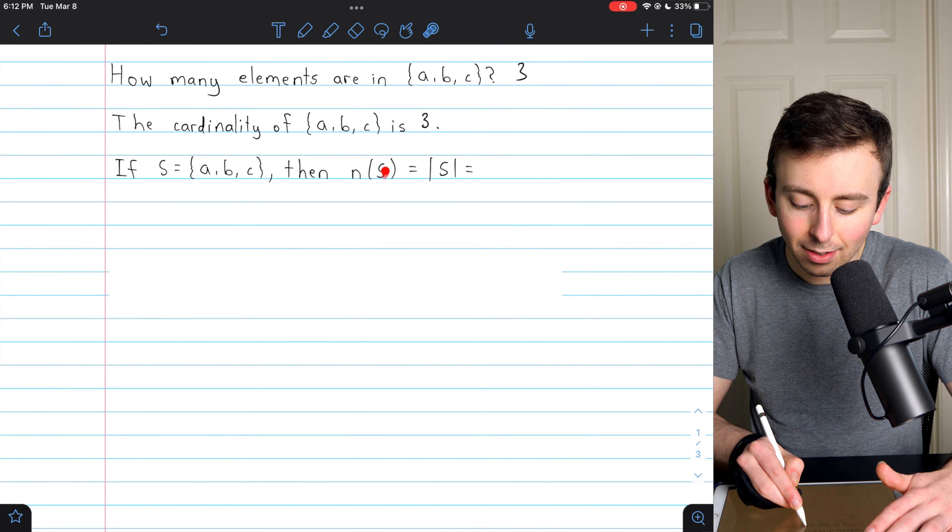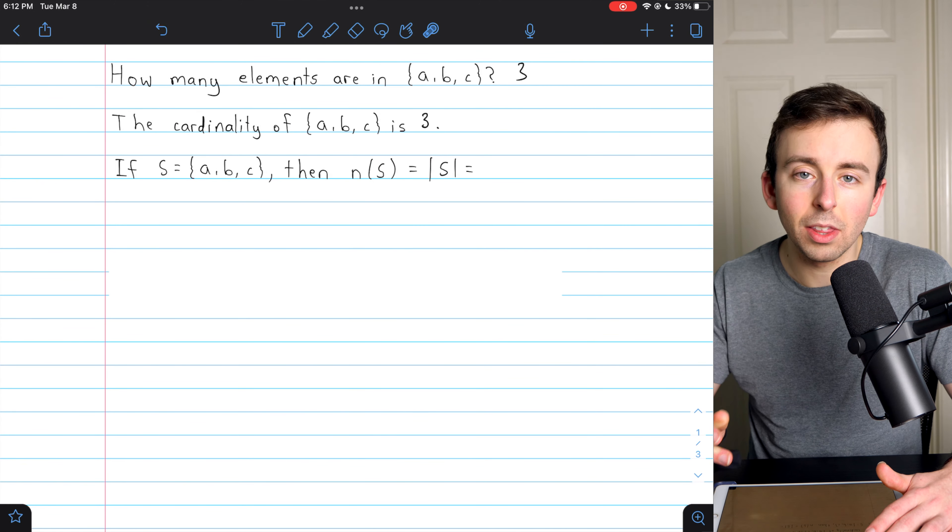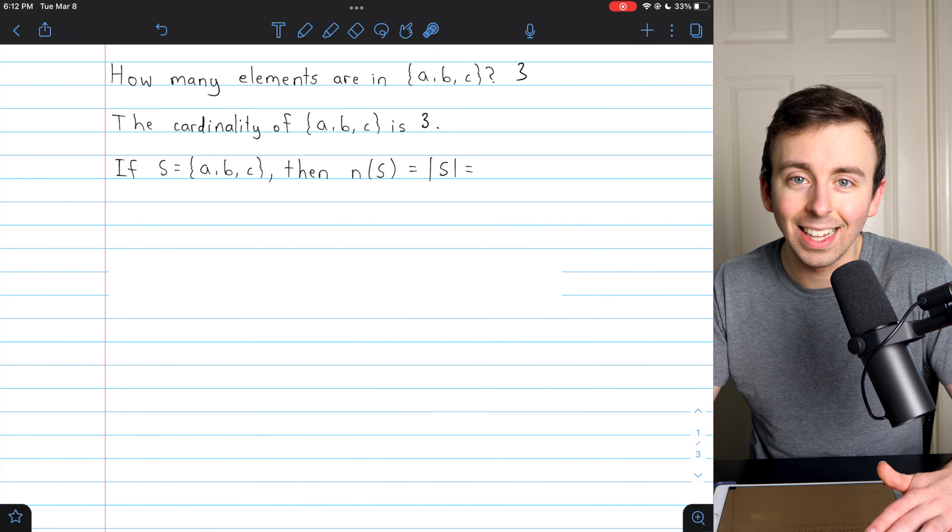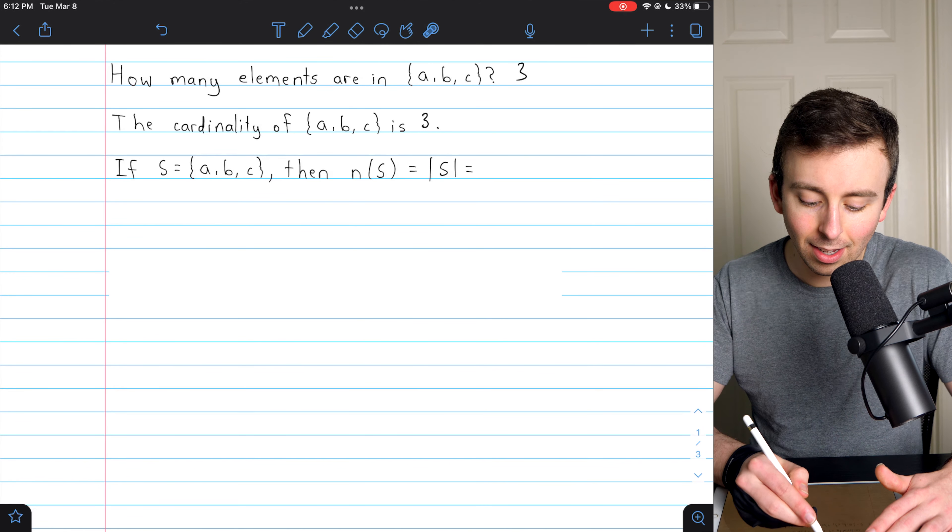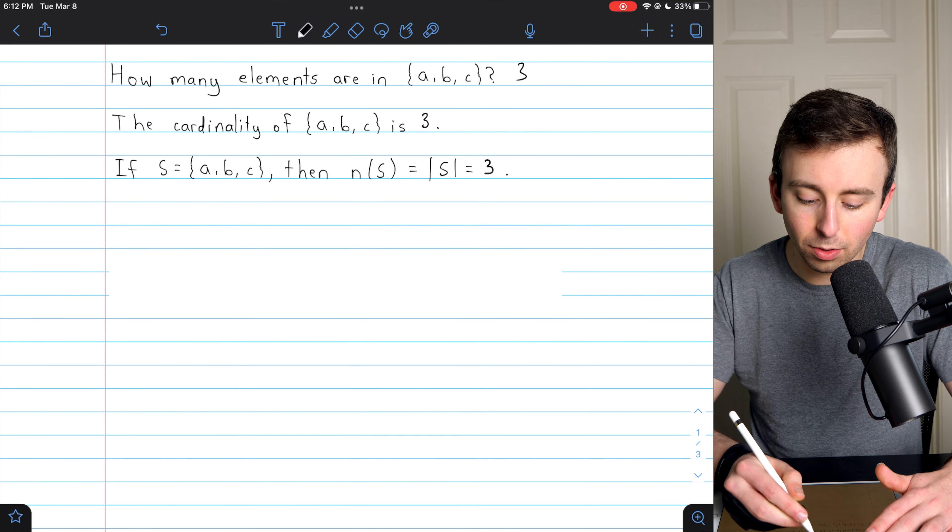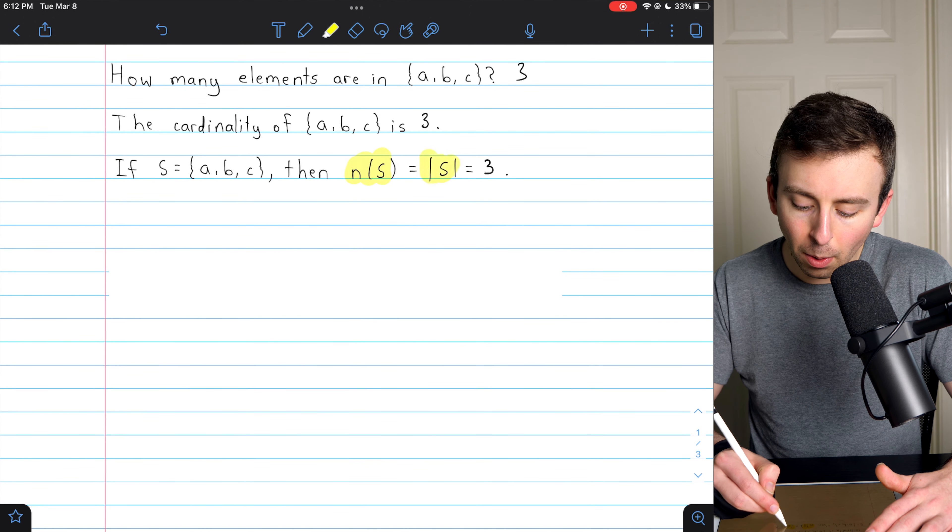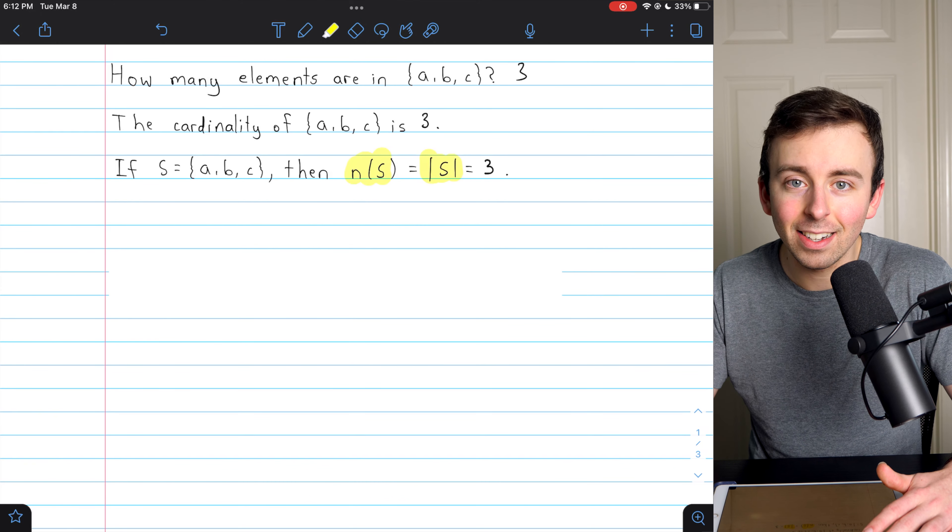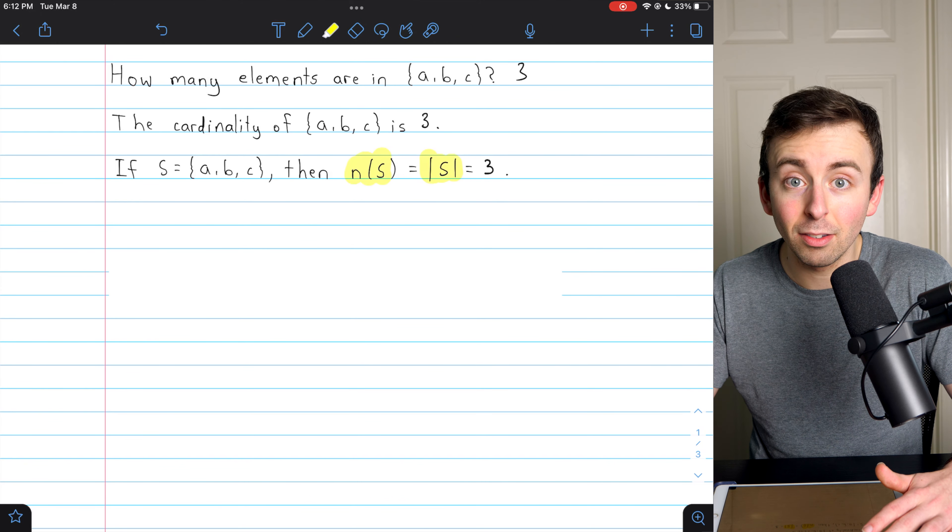Then n(S), also sometimes written with absolute value bars, like the magnitude of S, that is the cardinality of S. So those pieces of notation both represent the number of elements in the set. The cardinality of S is three.